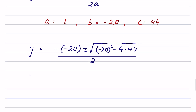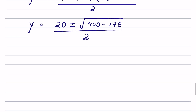So y equals minus (minus 20) plus or minus the square root of (minus 20) squared minus 4 times 1 times 44, all over 2 times 1. This simplifies to y equals 20 plus or minus the square root of 400 minus 176, which is 224, over 2.